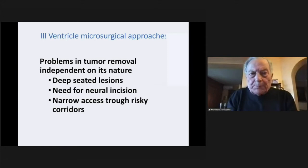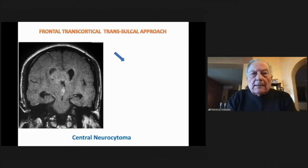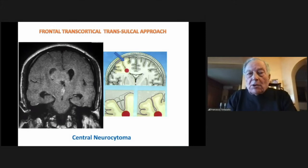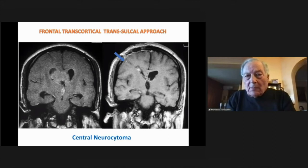For the transcortical approach — and I add the transsulcal approach, as in central neurocytoma — the classical transsulcal corridor is used to reach the ventricle. As you can see here, the corridor in the postoperative control is very narrow, and you see the third ventricle completely free.